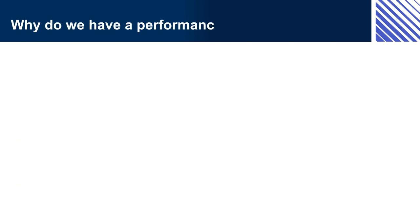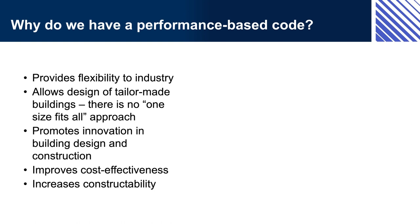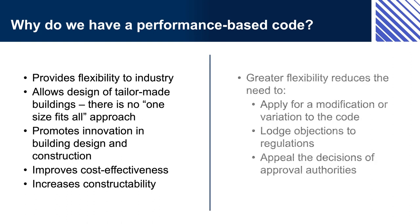Why do we have a performance-based code? In the past, Australia's building and plumbing codes were prescriptive rather than performance-based. This means they were prescribed — mandated precisely: when something must be done, what must be done, and exactly how it must be done. This meant that when a designer or builder wanted to do something different or innovative, they had to seek approval from a specialist tribunal or court, which could take a long time and add significant cost. This lack of flexibility made it hard to innovate and improve building design, practices and materials, delayed projects, and increased costs.